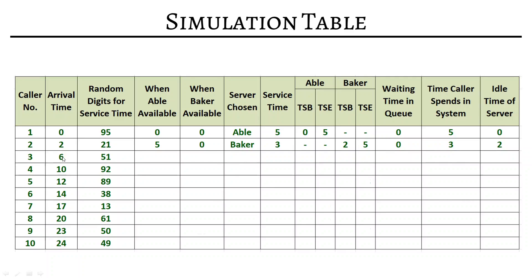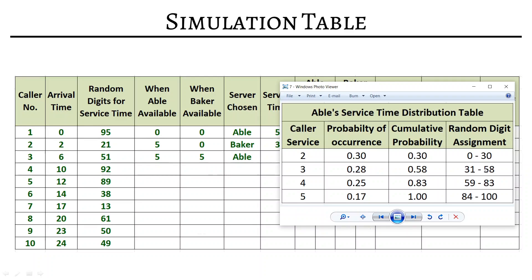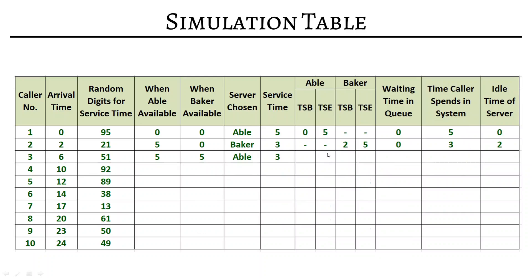For the third caller arriving at time 6, Abel is free at 5 and Baker is also free at 5 — both are idle. We choose Abel. Random digit 51 gives service time 3. Service begins at 6 and ends at 9. Baker is relaxing. Waiting time is 0; time in system is 3. Abel was free from 5 to 6, so idle time is 1 minute.